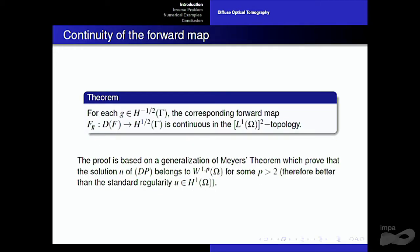The first result we have proved is that the forward map is continuous — that is, for each G in H minus one-half, the corresponding forward map is continuous in the L1 topology. The proof is based on a generalization of the Meyers theorem, which shows that the solution of the direct problem belongs to the space W1,p for some p greater than 2. So we have better regularity than the standard regularity that U is in H1. This result is important to prove the convergence theorems for the regularization method we are going to present.